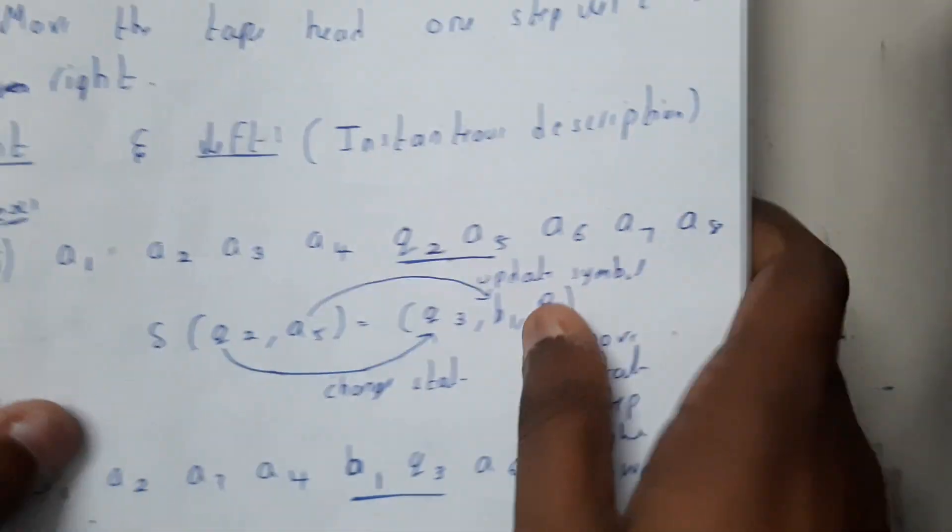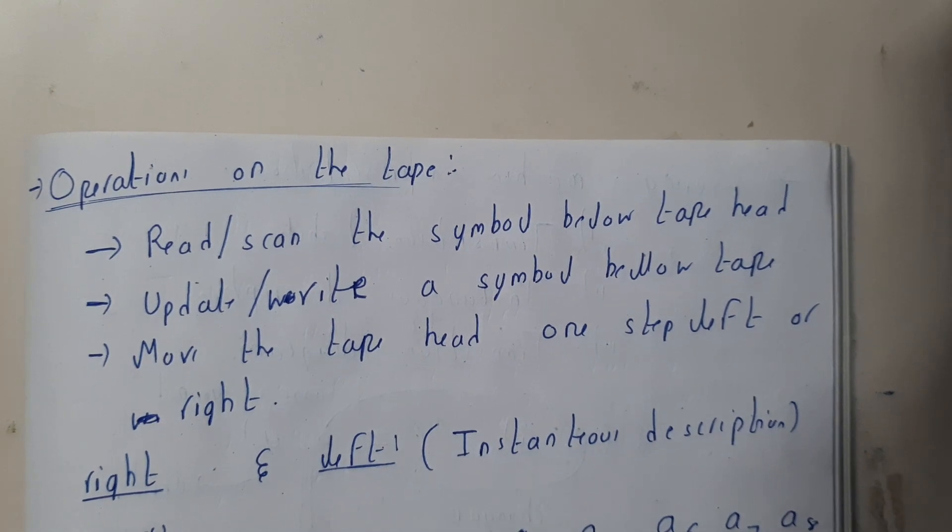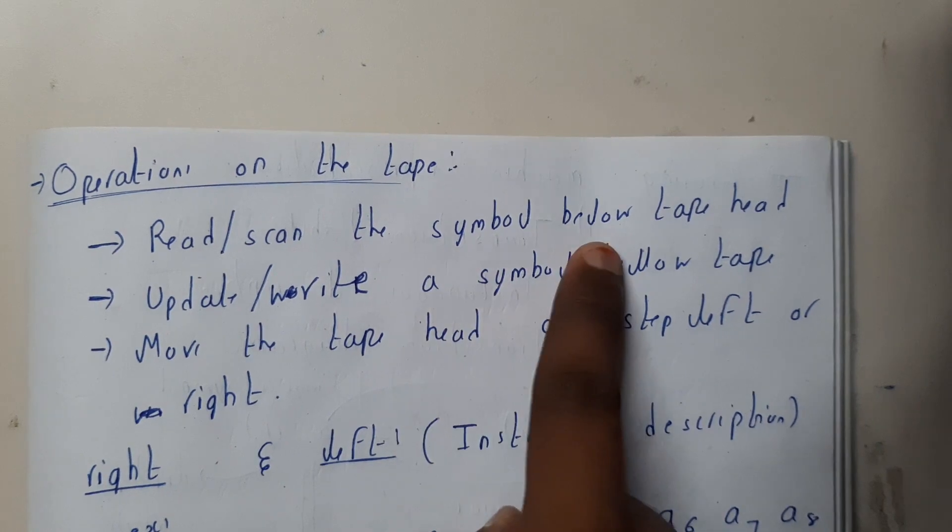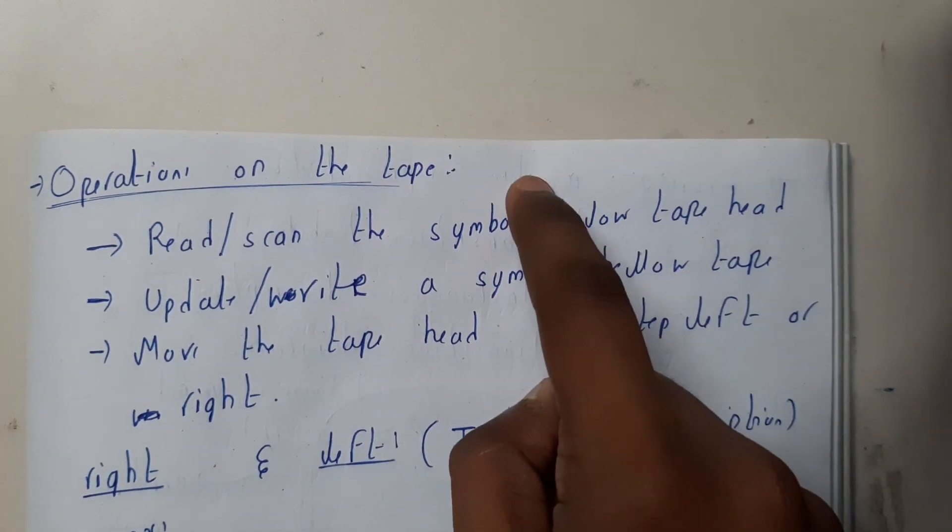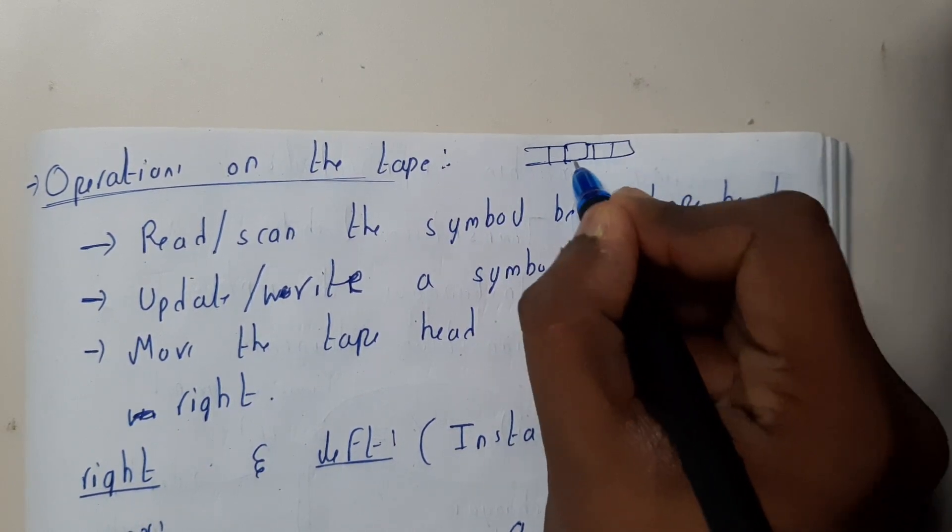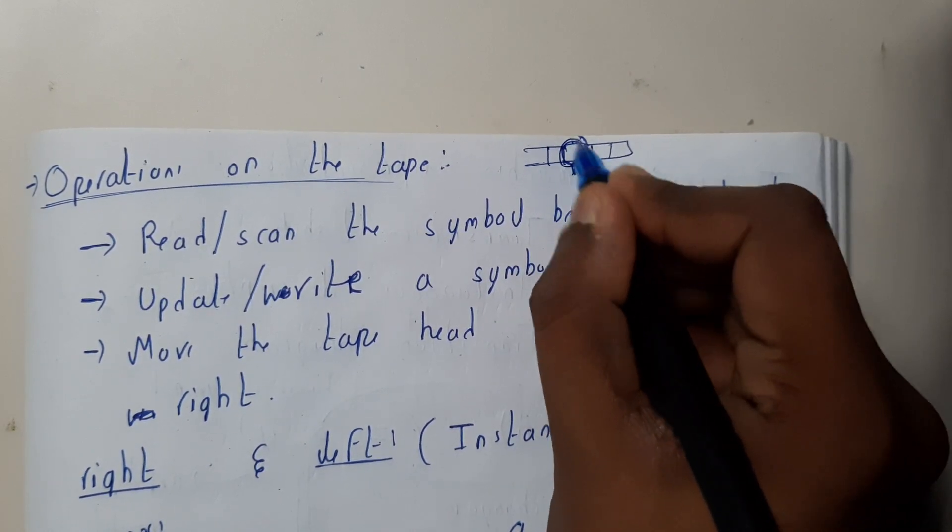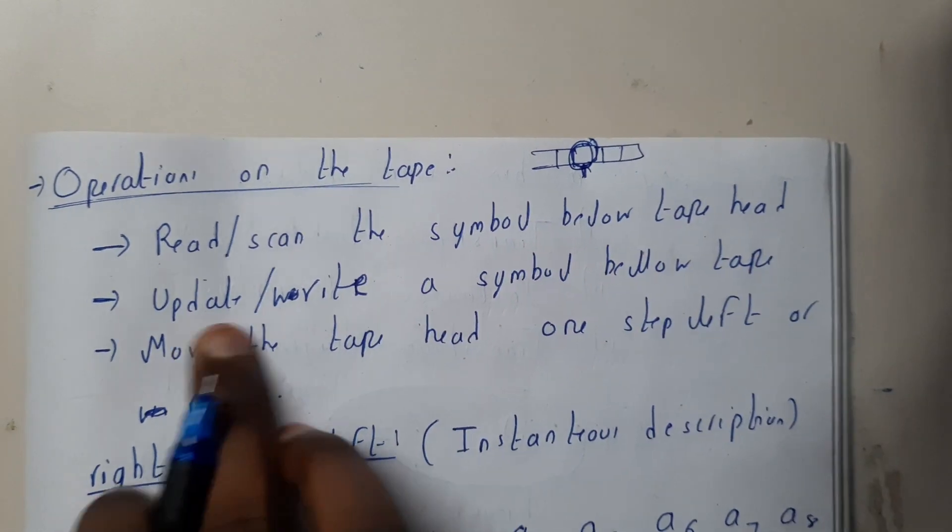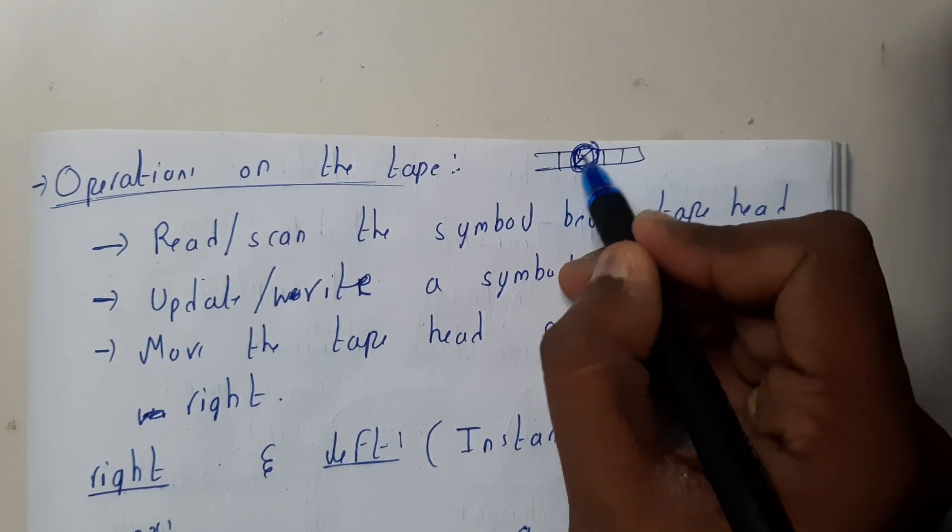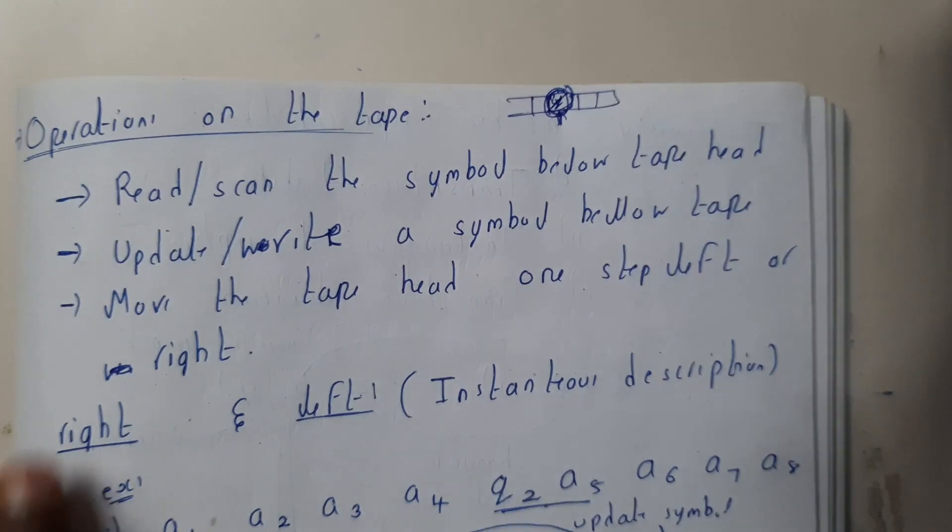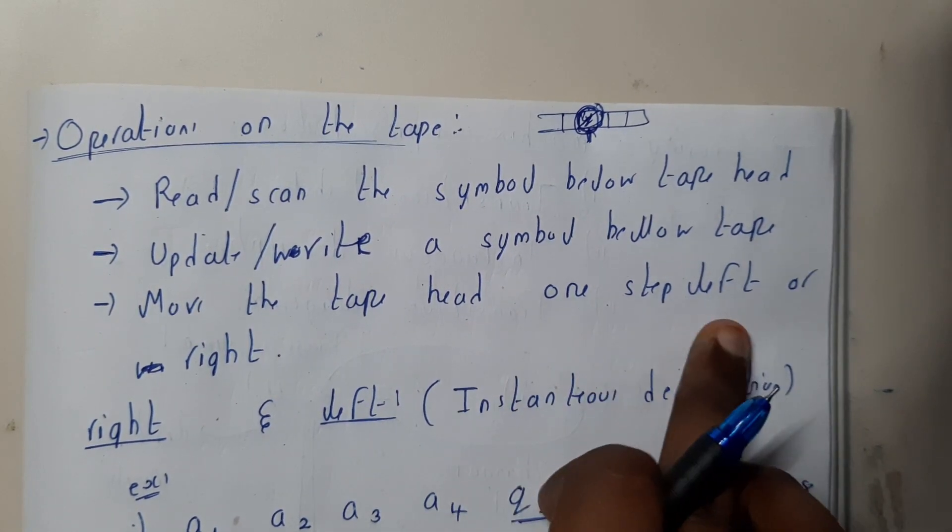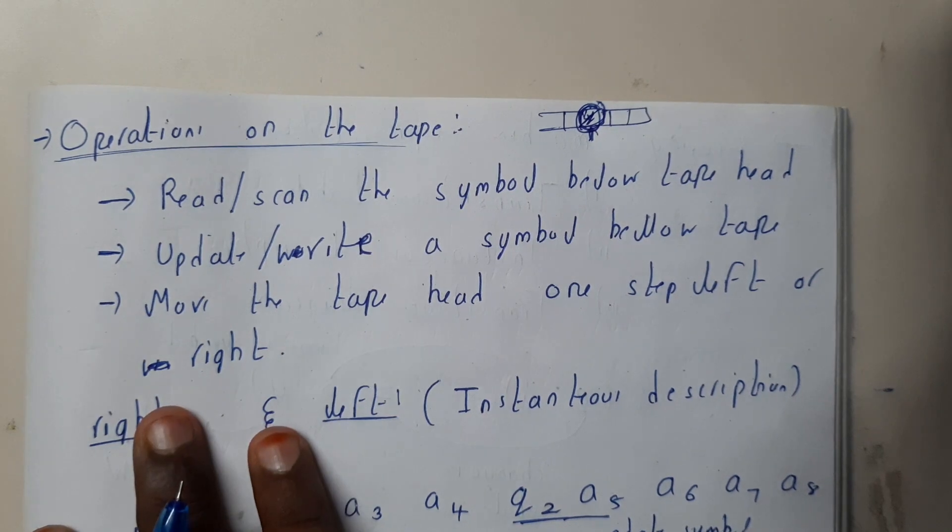What are the operations on the tape? We can read or scan the symbol below the tape head. Wherever the tape head is, we can read or scan the symbol below it. We can update or write the symbol below the tape head. If it is x and we want to update it to y, we can update it. Similarly, we can move the tape head one step left or to the right according to our requirement.